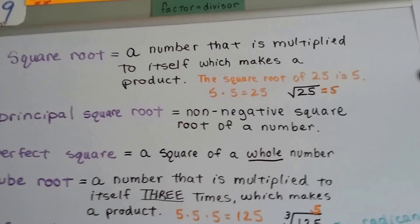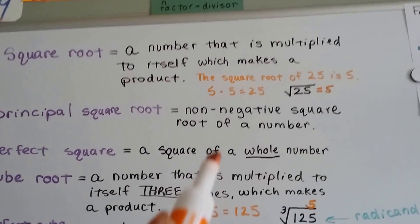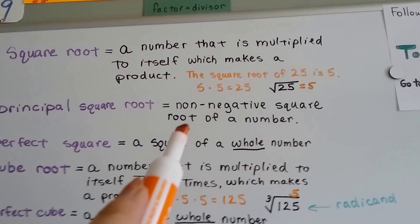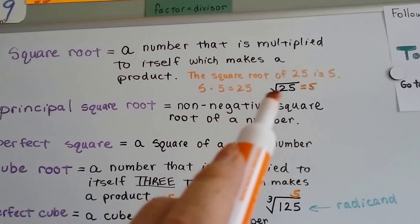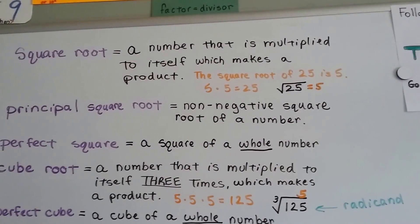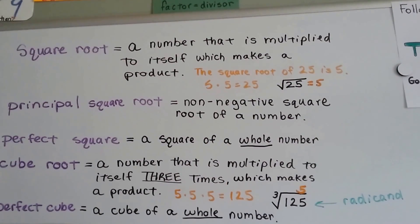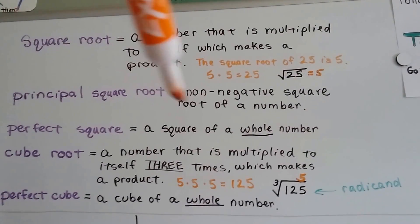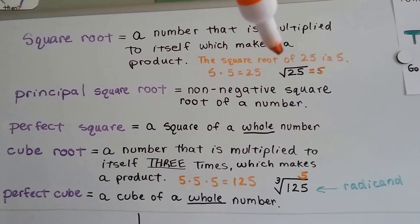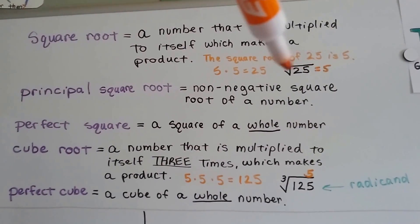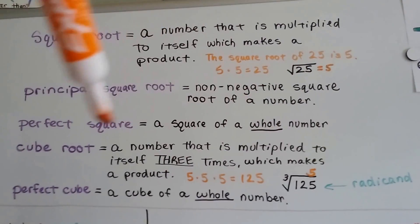A principal square root is a non-negative square root of a number. So because this is positive, that would be a principal square root. A perfect square is the square of a whole number. This is a whole number, so that's also a perfect square.